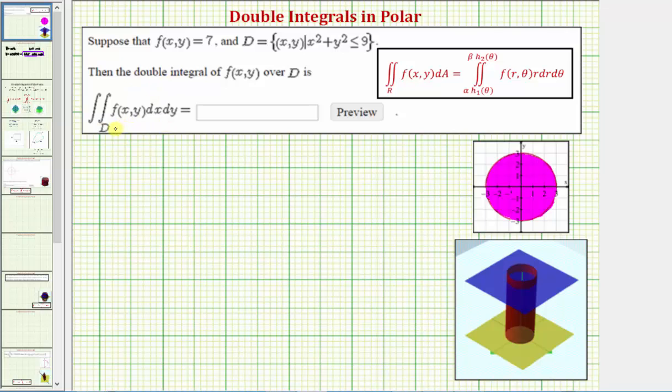We're also going to evaluate the given double integral over the region D, where the region D is given here, where D equals the quantity x squared plus y squared less than or equal to nine, and our function f of x comma y is equal to seven.